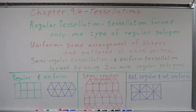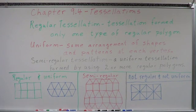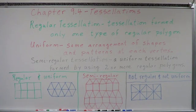We can have a regular tessellation. A regular tessellation is formed by only one type of regular polygon. We're going to use one type of regular polygon — such as an equilateral triangle, square, or hexagon — to form a regular tessellation.